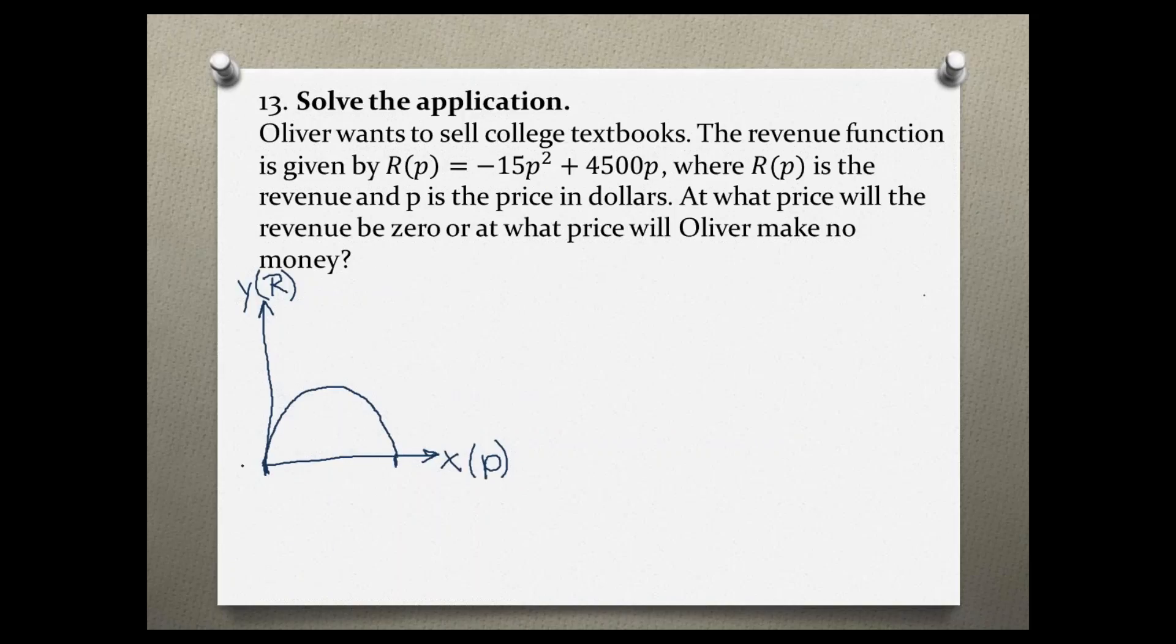So to find out when the revenue is zero, which happens on the x-axis, our R needs to be set to zero. So if this is our function R(p) equals negative 15p squared plus 4500p, the picture represents that the revenue function needs to be zero. So we would find those two spots, what the price would be when the revenue is zero.